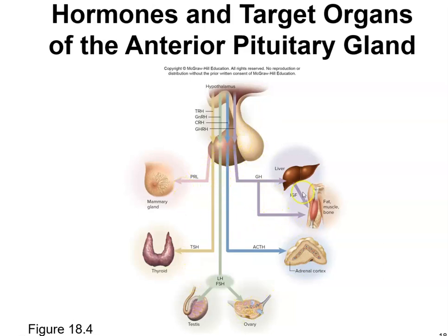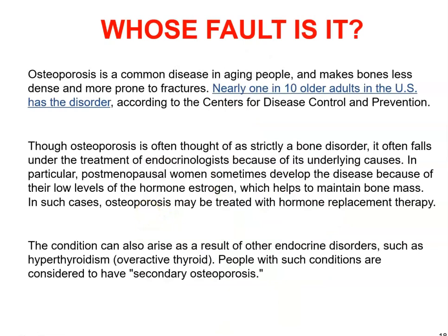Osteoporosis is a common disease in aging people that makes bones less dense and more prone to fractures; nearly one in ten older adults in the U.S. has this disorder according to the CDC. Though often thought of as strictly a bone disorder, osteoporosis often falls under the treatment of endocrinologists. Post-menopausal women may develop it due to low estrogen levels, which help maintain bone mass, and it can also arise from endocrine disorders such as hyperthyroidism, a condition called secondary osteoporosis.